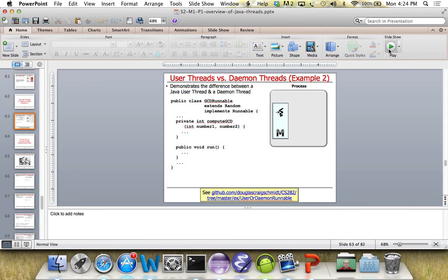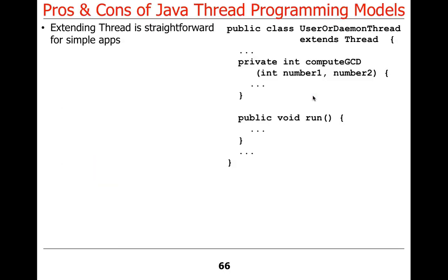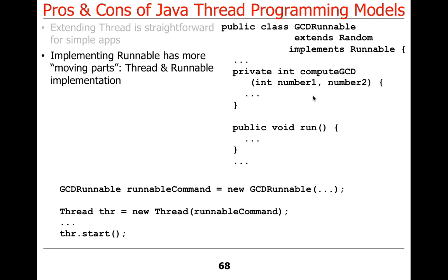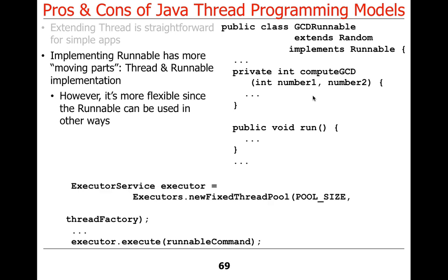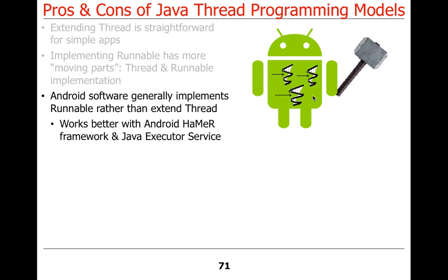So why would you choose one approach versus the other? Extending Thread is really simple — you extend Thread and you're basically done. The problem is it's somewhat limited because you can't have any other superclasses, and it tightly couples you to threads. Implementing Runnable is ever so slightly more complicated because you have to connect the Runnable and Thread together, but it's more flexible. In Android specifically, you can use the Handler framework, put something into the UI thread to run that way, or also use the ExecutorService.